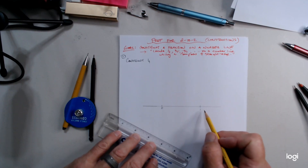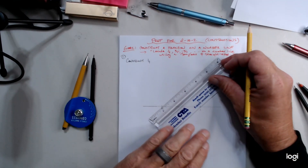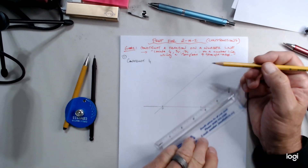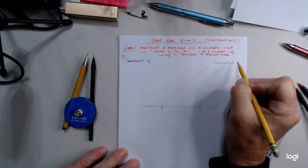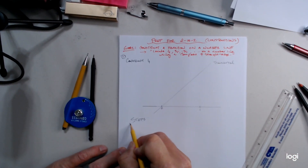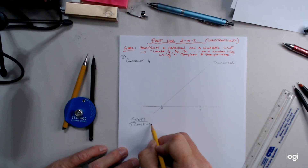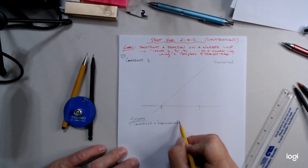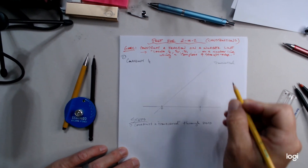Place 0 and 1 on the number line. The first step is to construct a transversal through 0. Take your straight edge, which is your ruler, line it up with 0, and draw a line going through 0. It's called a transversal — a fancy word for an intersecting line. Step 1: construct a transversal through 0.